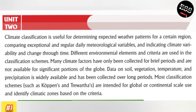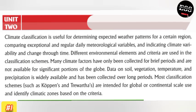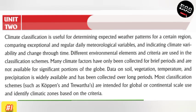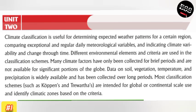Data on soil, vegetation, temperatures, and precipitation is widely available and has been collected over a long period. Most classification schemes are intended for global or continental scales, used to identify climatic zones based on the criteria.